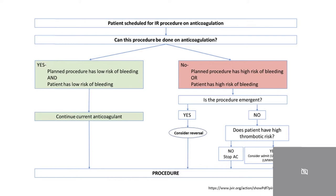If the procedure has low risk of bleeding and the patient has a low risk of bleeding, anticoagulation can usually be continued. However, if the procedure has a high risk of bleeding or the patient has a high risk of bleeding, you have to consider if the procedure is emergent or not. If it is emergent, you should consider reversal of anticoagulation before the procedure. If the procedure is not emergent, consider whether the patient has high thrombotic risk. If not, stop anticoagulation. If the risk is high, consider a heparin bridge, which entails stopping the patient's normal anticoagulation in favor of heparin.